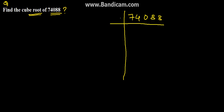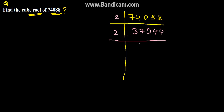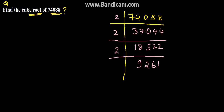Here we will divide it by 2, starting with the smaller number. The number will be 37044 dividing it by 2. Further, dividing it by 2 we get 18522. Further, dividing it by 2 again we get 9261.